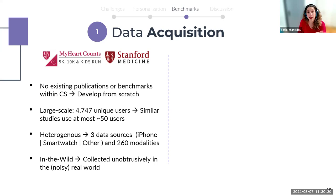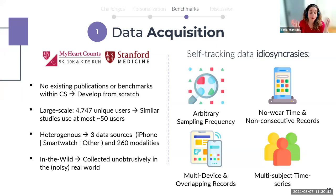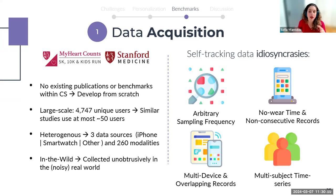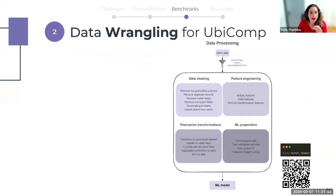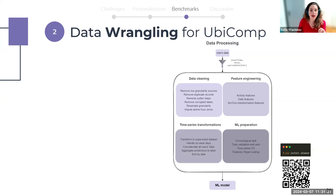To develop the UbiWare benchmark, we utilized the My Heart Counts dataset published in 2019 by Stanford Medicine. Given the lack of benchmarks, we had to develop everything from scratch. My Heart Counts is actually the largest open ubicomp dataset today, with extremely heterogeneous and noisy data. This gives us an idea of ubicomp data self-tracking idiosyncrasies, such as arbitrary sampling frequency, non-consecutive records due to no-wear time, overlapping records due to multiple devices and fitness applications per user, and multiple subjects each combining all the above challenges.